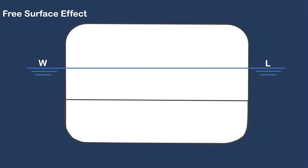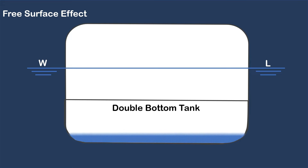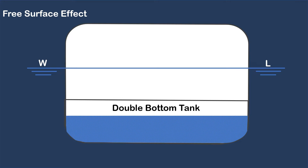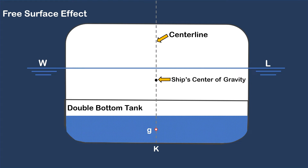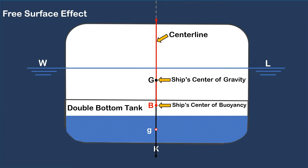If this is the ship's transverse section, let us assume that the ship is floating in still water at an upright condition, and this is the waterline. The double bottom tank is partially filled with water, and the center of gravity of the water inside the tank is marked with a small letter G. This point is the ship's center of gravity, marked with capital letter G, where the total weight of the ship acts vertically downward. The geometrical center of the underwater volume is the center of buoyancy, marked with capital letter B, where the buoyancy force acts vertically upward. For a ship to float, the buoyancy force should be equal to the total weight acting vertically downward.